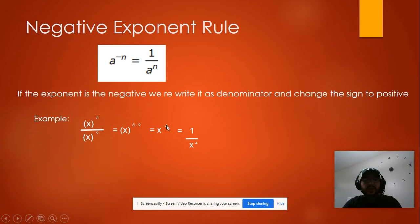So we don't leave it as a negative exponent. We just rewrite it as a fraction and the denominator will be the variable and then the exponent will be now positive. So it will be 1 divided by x to the 4 power. That's the way we're going to rewrite it when we got a negative exponent.